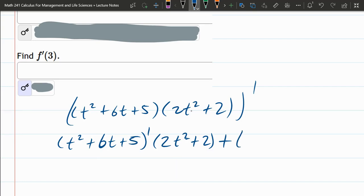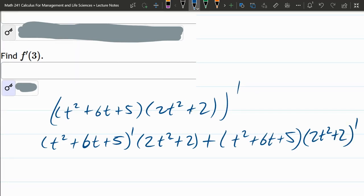Now, regular F, t squared plus 6t plus 5 times G prime, 2t squared plus 2 prime.